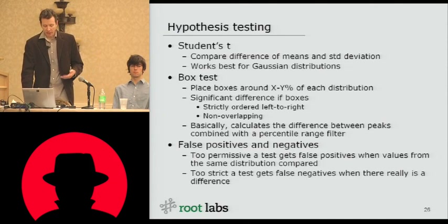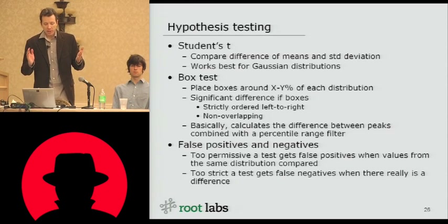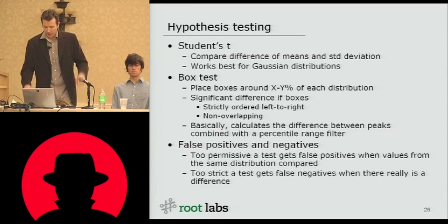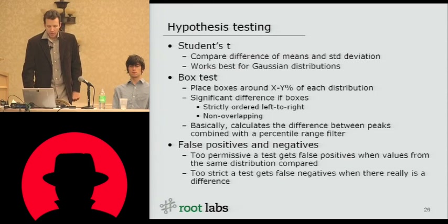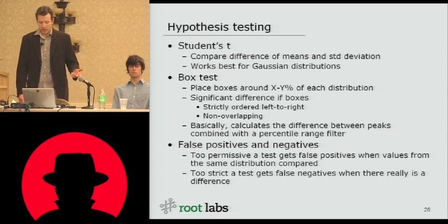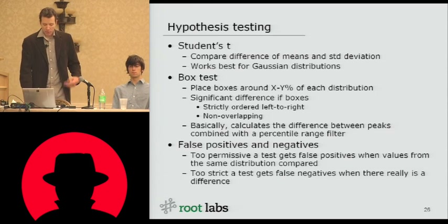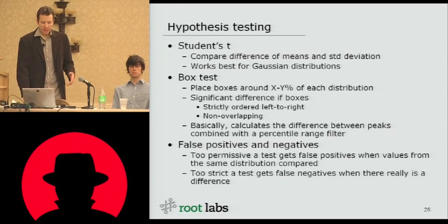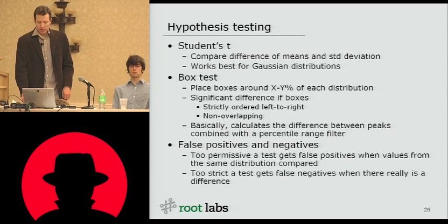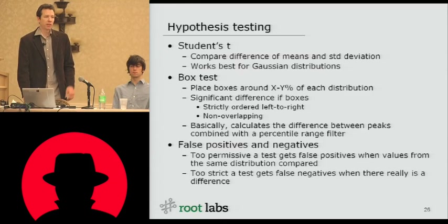This is similar to percentile range filtering — you're calculating the difference between the peaks based on a percentile range filter for finding the peak. False positive and false negative are the standard concern; you want to avoid both. If you have too permissive a test, you get false positives by saying they're different when they're not. If you have too strict a test, you'll reject things which actually are different.